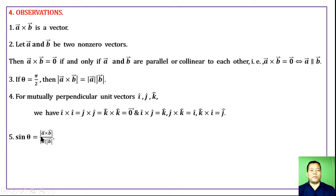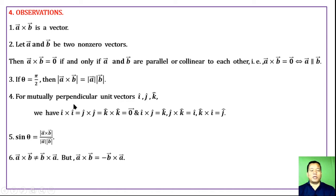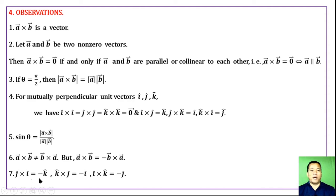sin theta equals magnitude of a cross b divided by (magnitude of a into magnitude of b). Also, a cross b does not equal b cross a. In general, a cross b and b cross a are not equal — b cross a is in the opposite direction. But a cross b equals minus times b cross a. Consequently: ĵ cross î = −k̂, k̂ cross ĵ = −î, î cross k̂ = −ĵ.